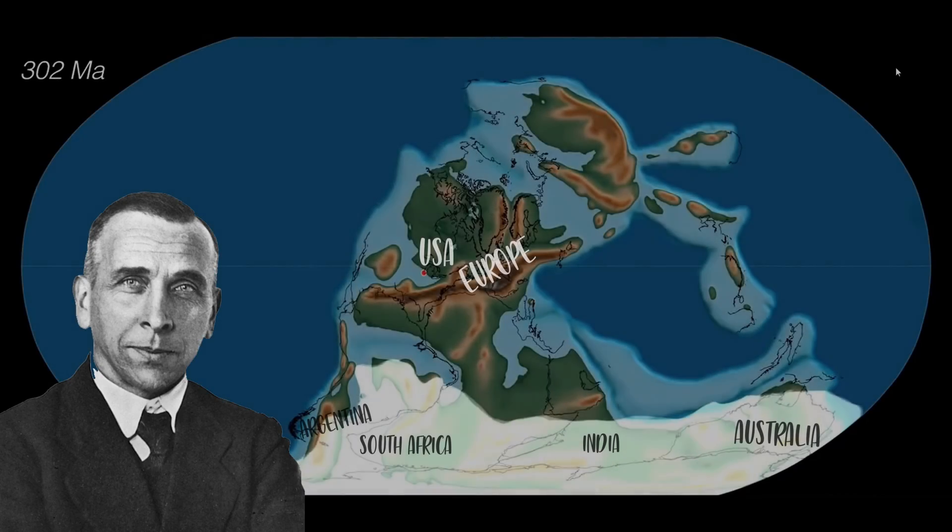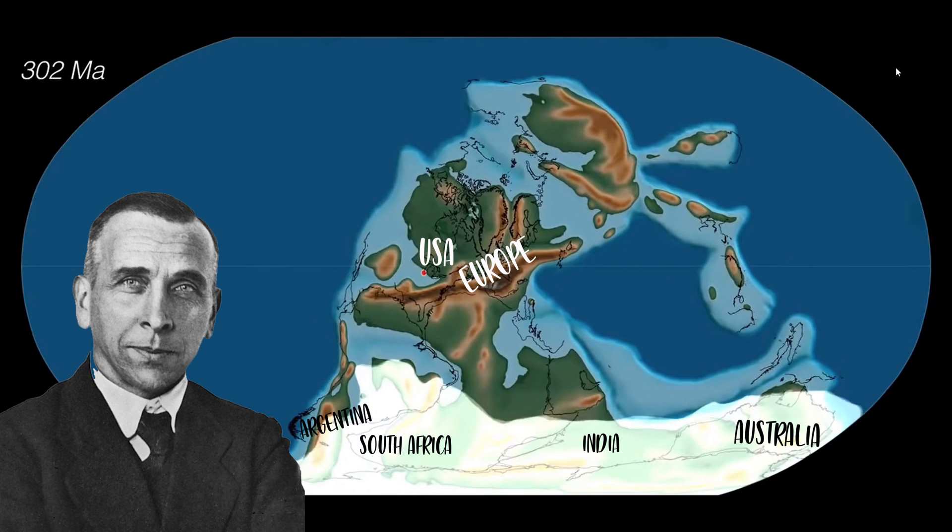With South Africa aligned just with the geographical south pole, it would have explained the great glaciers. And the rest of the continents could be located near the equator, so that with this extreme moisture and heat, large deposits of coal could be formed. His theory made sense.